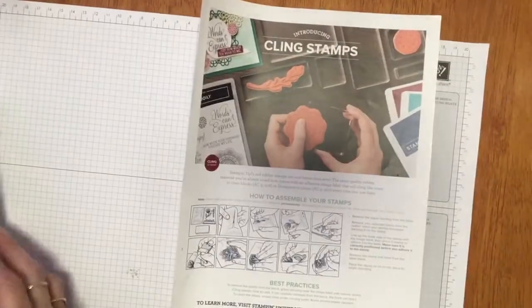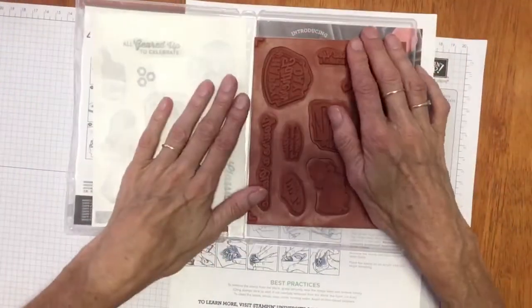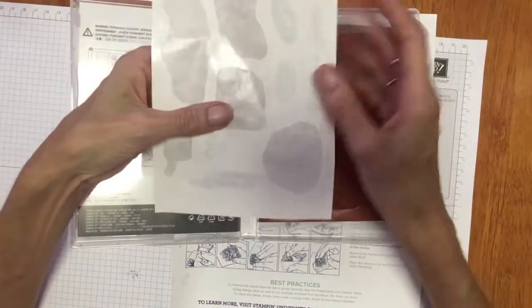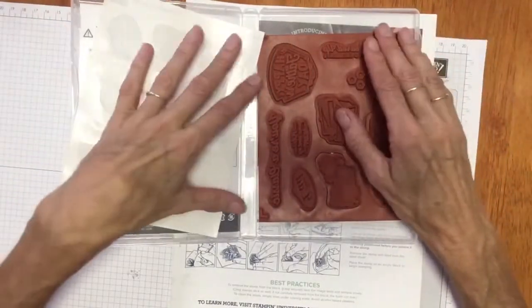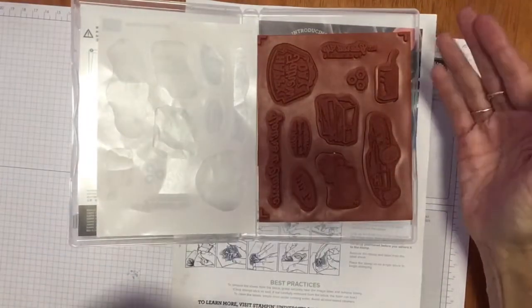So the cling stamps look very similar to the clear stamps with the red rubber, but they have a different adhesive backing on them that really makes them stick hard to your block so you don't have that issue of them falling off.